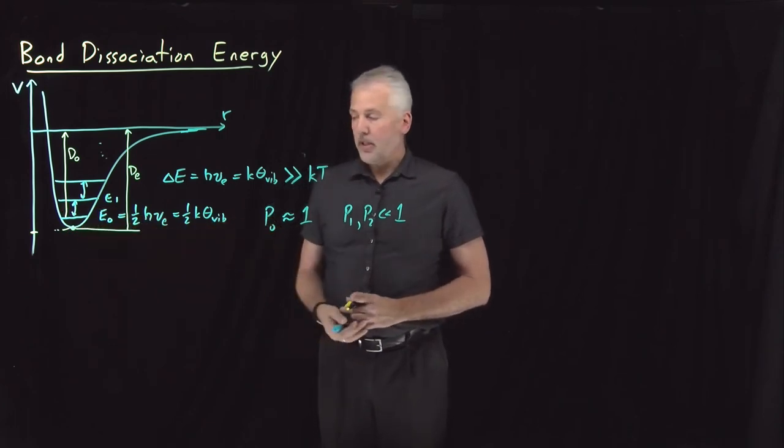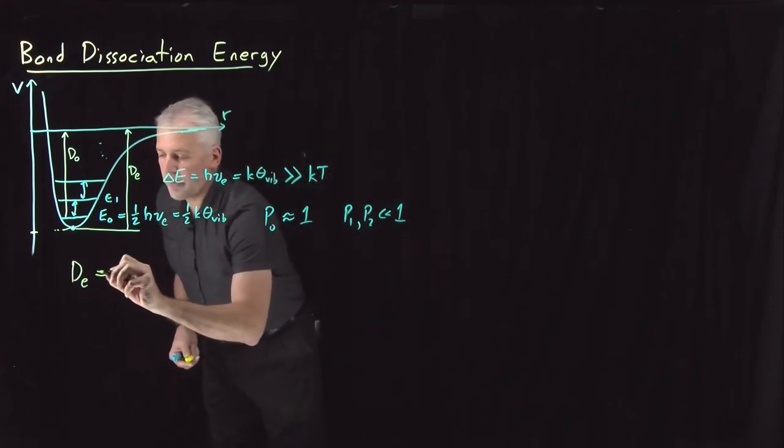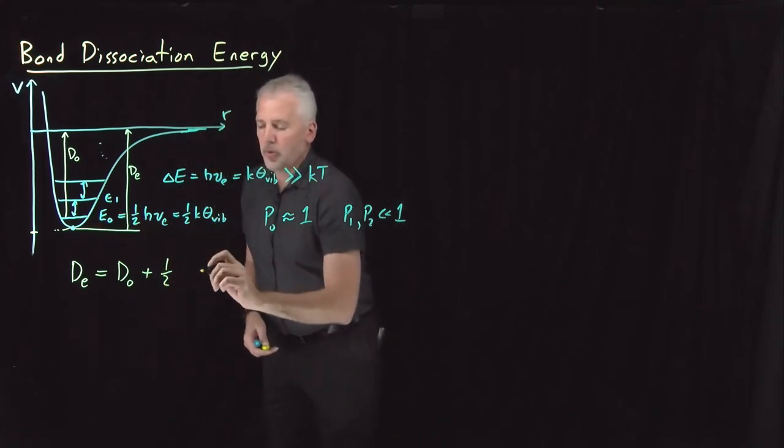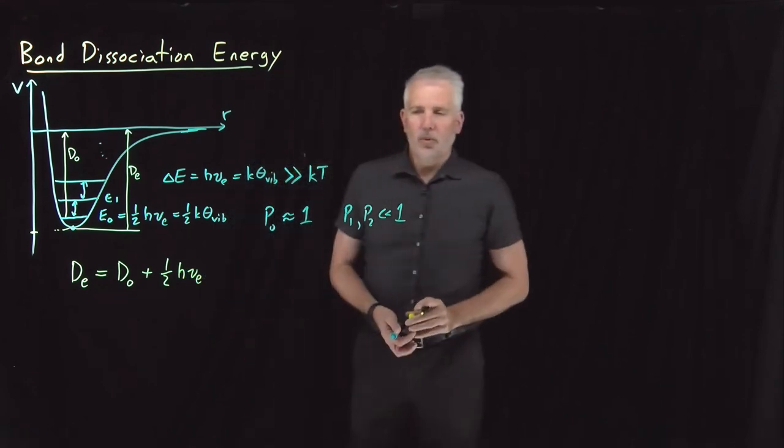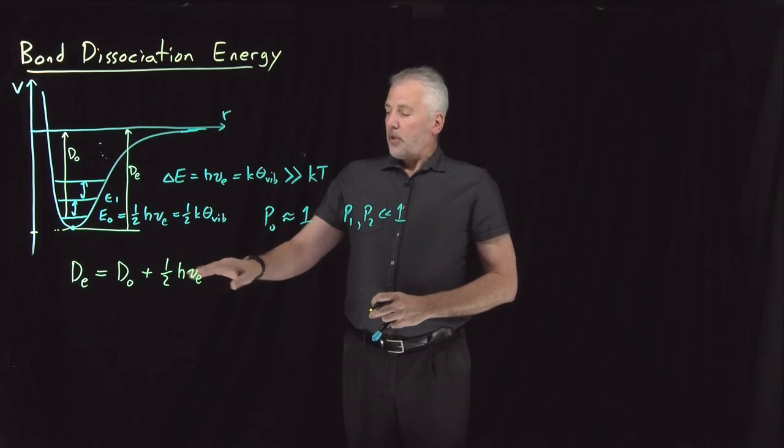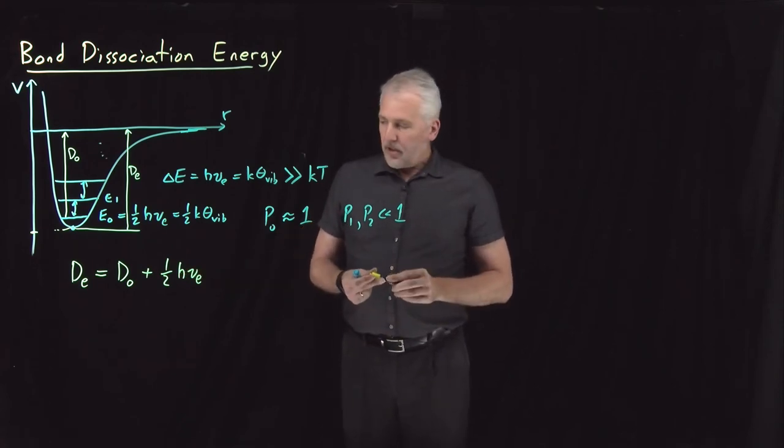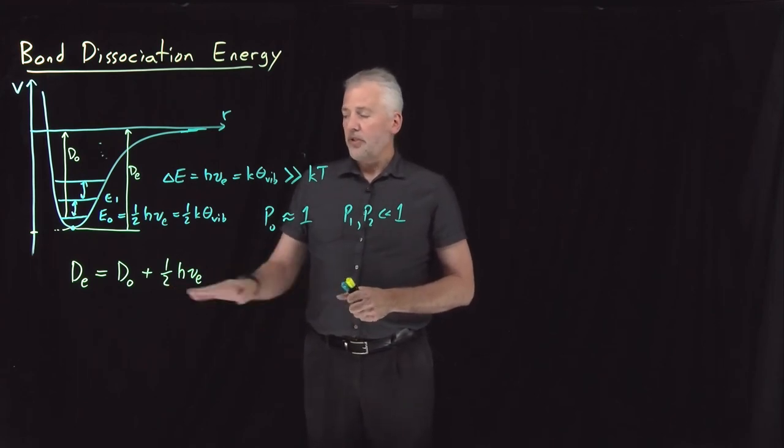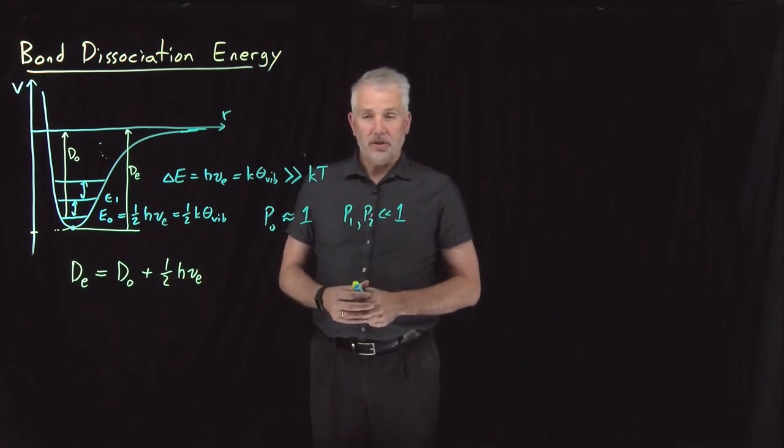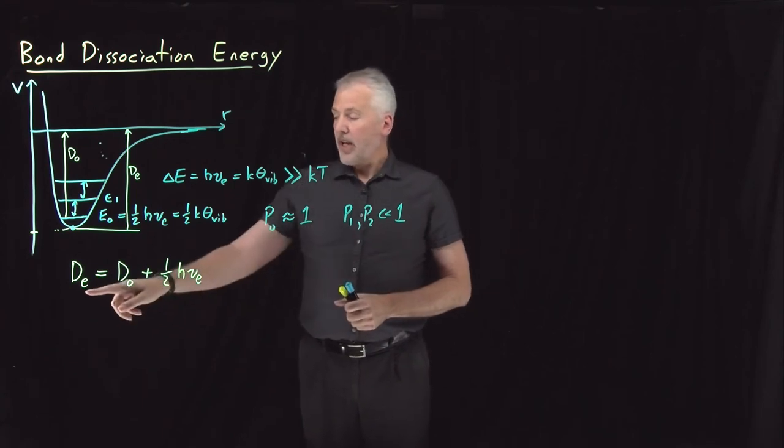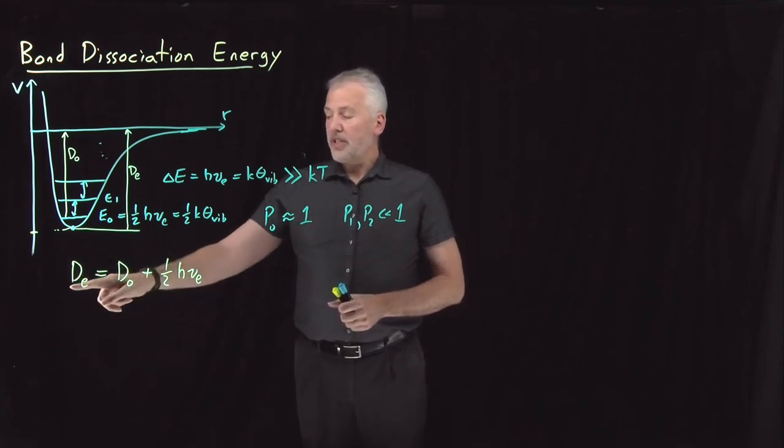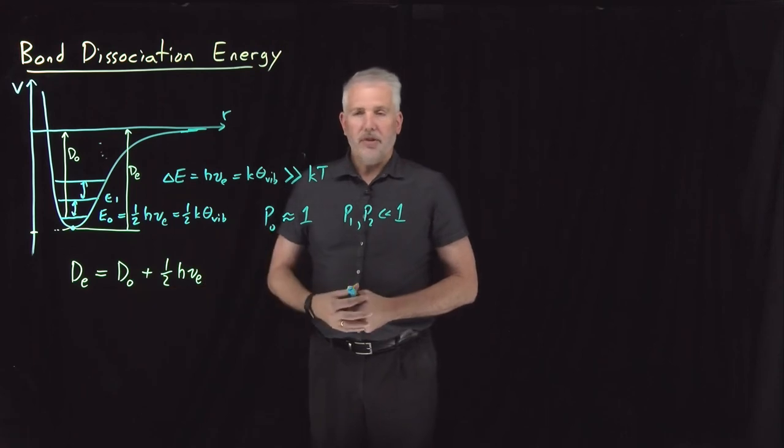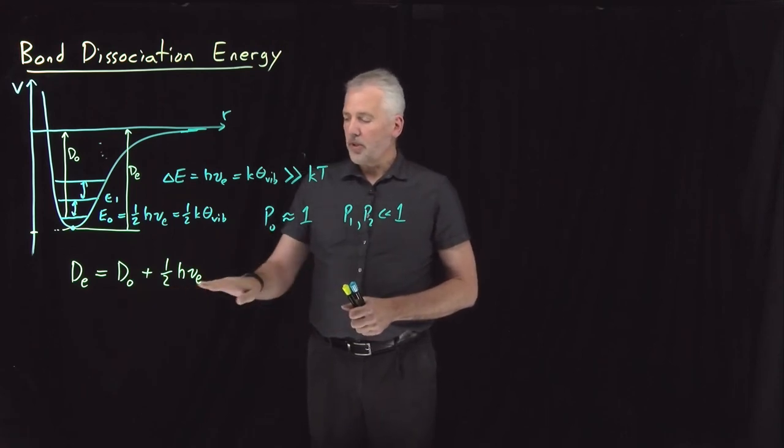That never happens in real life, but it's still useful to be able to say the dissociation energy from the bottom of the well differs from the dissociation energy from the ground state by this zero-point energy, one-half H nu, or one-half K theta. What we can do with that information will begin to explain why it is that certain molecules have different dissociation energies than others, and in particular why certain isotopes of certain nuclei have different dissociation than others. For now, we'll just point out that these two dissociation energies, D-E and D-naught, can be substantially different from each other. They're different from each other by this zero-point energy, and that difference can be fairly substantial. We'll plug some numbers in and work some examples of that coming up next.